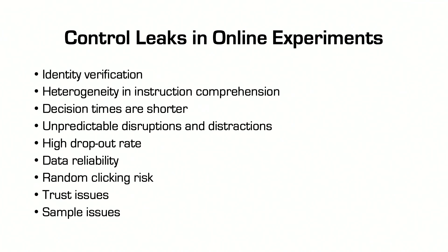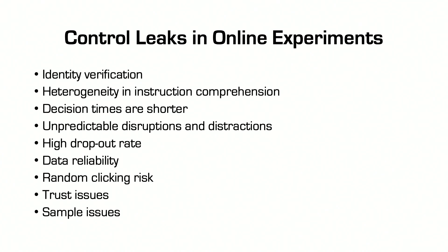This is a comprehensive, though probably not exhaustive, list of issues you might experience as a researcher conducting online experiments as opposed to lab experiments — there are definitely big control leaks. The first is identity verification. The biggest problem in online experiments is that you cannot verify people's identity. It could be me participating in an experiment, or it could be my son participating in an experiment.